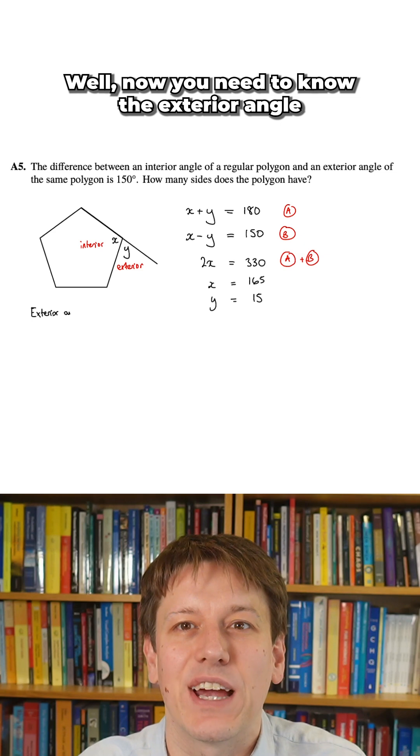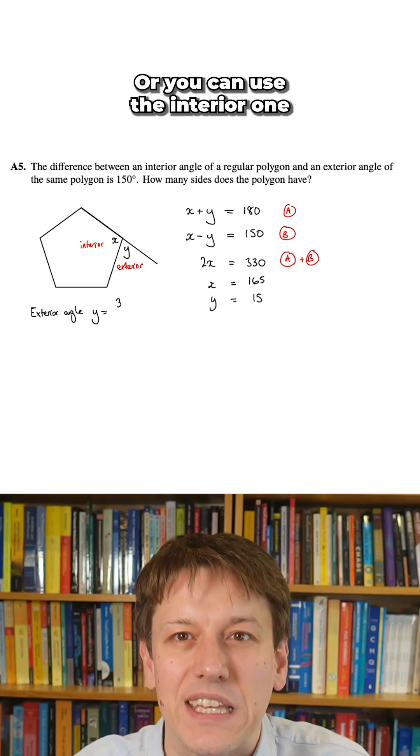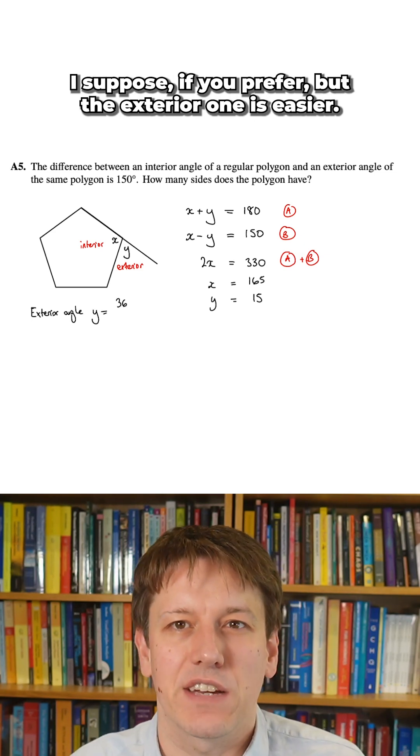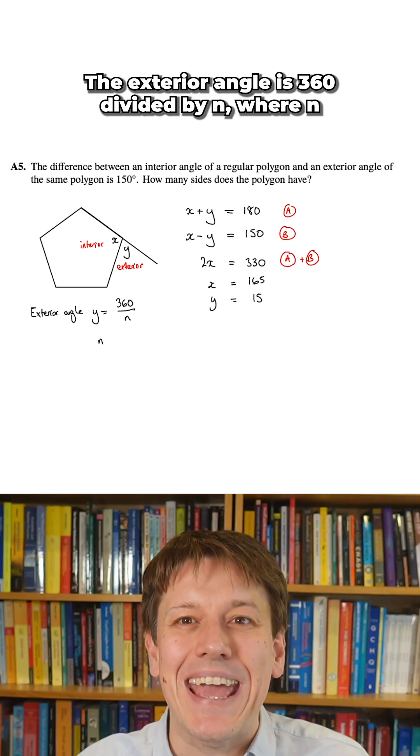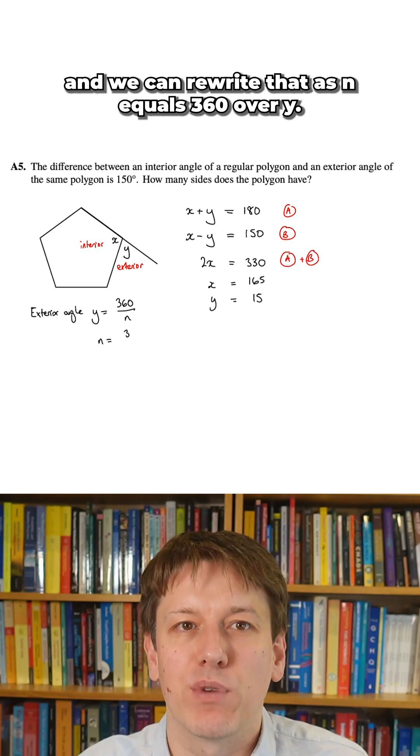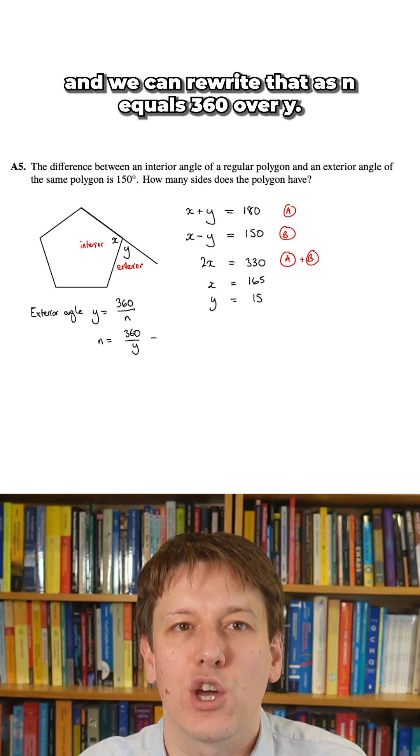Well, now you need to know the exterior angle formula for the regular polygon, or you can use the interior one, I suppose, if you prefer, but the exterior one is easier. The exterior angle is 360 divided by n, where n is the number of sides, and we can rewrite that as n equals 360 over y.